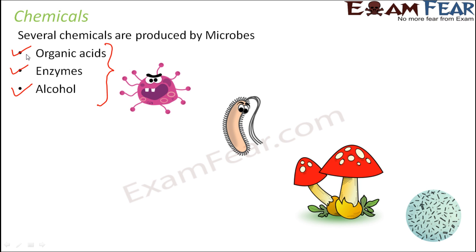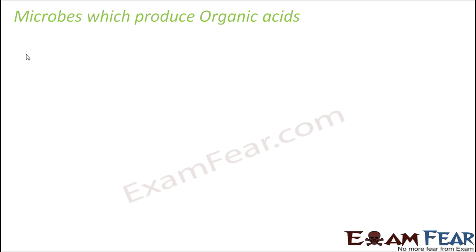Organic acids also help us in many ways. The best example is lactic acid — lactic acid bacteria help in producing lactic acid, which in turn helps in so many different processes like curdling of milk. So let us start with organic acids and see which microbes produce different organic acids.